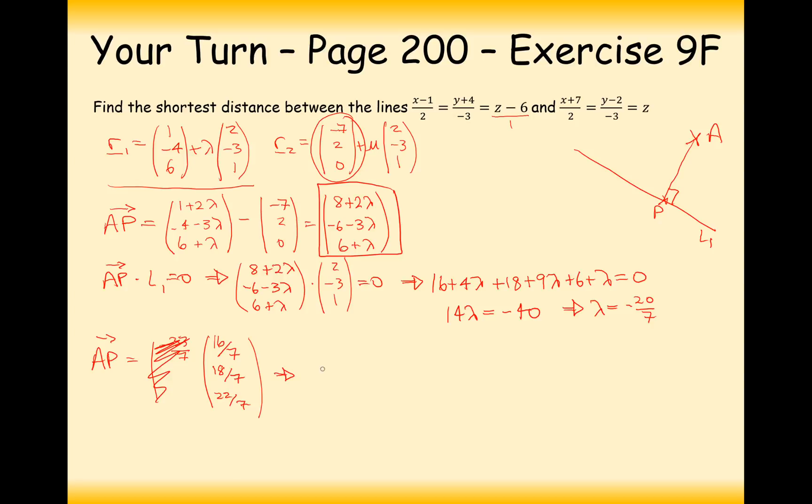Final step now. Final step is to now work out the magnitude from A to P, the shortest distance between the two parallel lines. So that's going to be 16 over 7 squared plus 18 over 7 squared plus 22 over 7 squared. So a shortcut for this is just going to be square the tops and then divide by 7. So square root of 16 squared plus 18 squared plus 22 squared and then divide that all by 7. So it's going to be 2 root 266, which doesn't really mean anything to me. Let's divide this by 7 and convert it into a decimal: 4.66 to 3 significant figures.